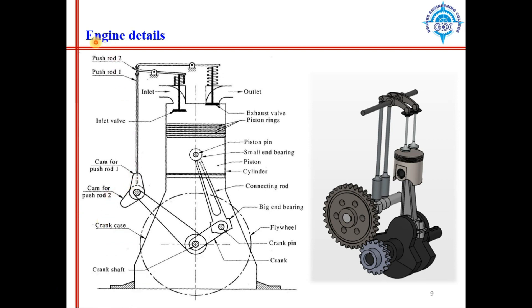Now let's look at the details of an engine and its different components. First, the crankshaft — this black shaft in the figure is the crankshaft. On that crankshaft, one link is mounted with a pin joint, called the crank. In the figure, this black portion is the crank. From the center to this point is the crank radius, and below that point some additional weight is present, called the counterweight.